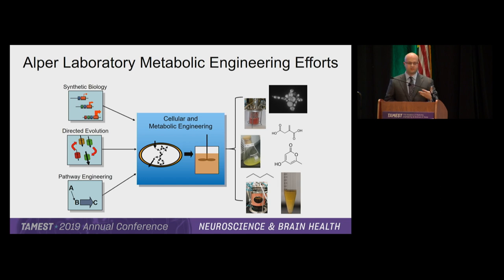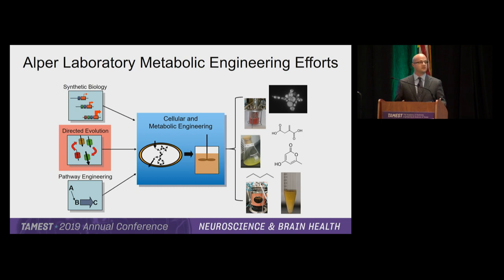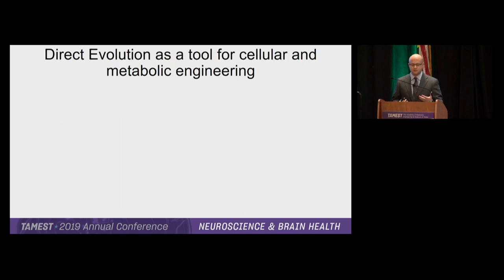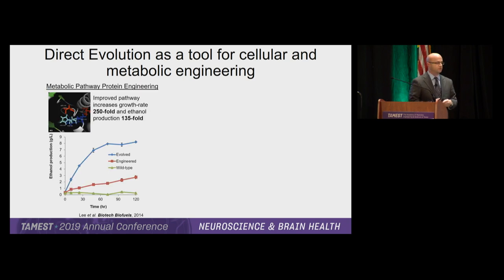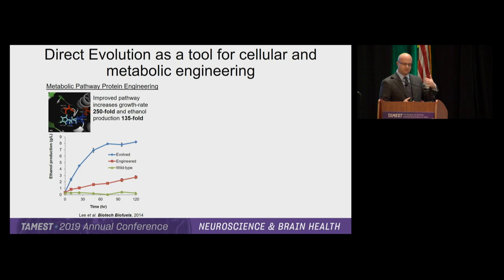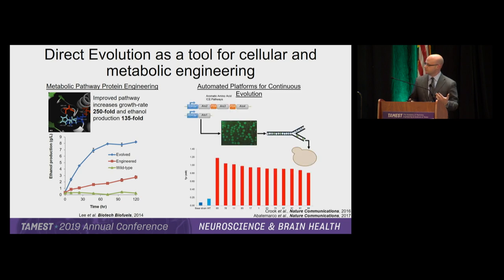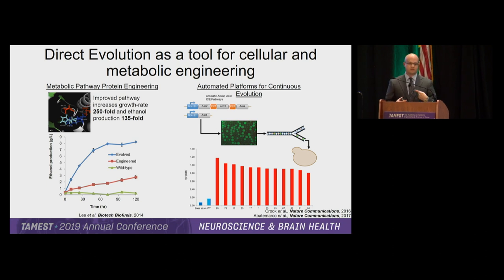These synthetic biology tools are useful for expressing genes and pathways, but we need to know what pathway to express and how to change it. A lot of our work revolves around directed evolution — a topic that, with the recent Nobel Prize, has resurged a lot of interest. We've used directed evolution to take xylose, an extraordinarily abundant sugar source in biomass, and get cells that can use this sugar at about 135-fold higher rates to produce ethanol. We've also used microfluidic-based systems to automate and miniaturize directed evolution and selection.